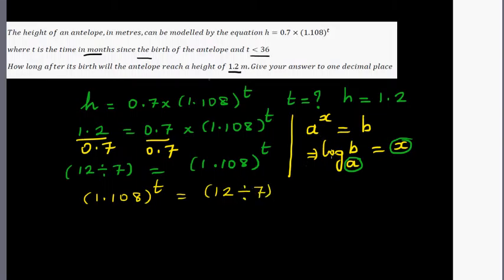So from this form, if you want to write this in log form, I can say the base is 1.108. So log base 1.108, I'll write here t. So 1.108 raised to t is equal to 12 divided by 7. This is from the exponential form to log form.